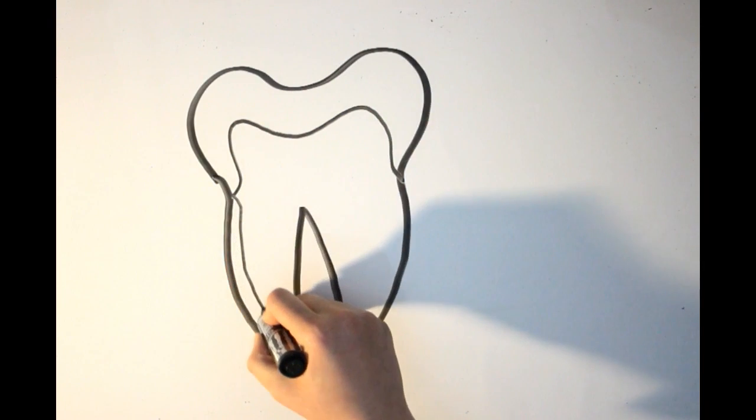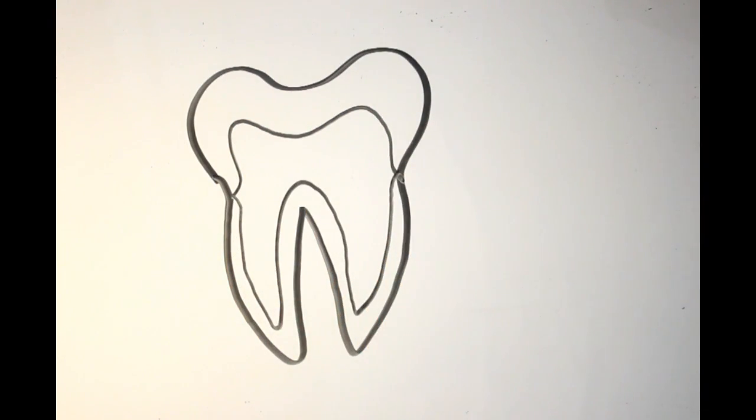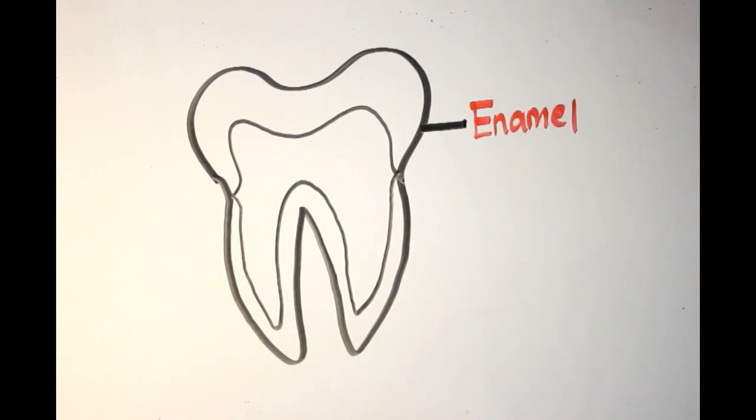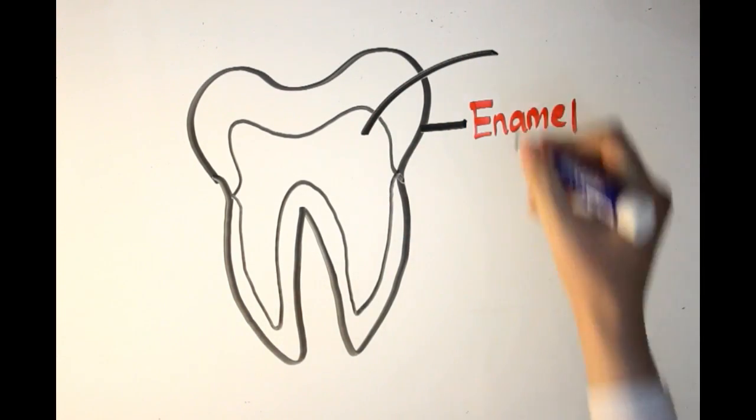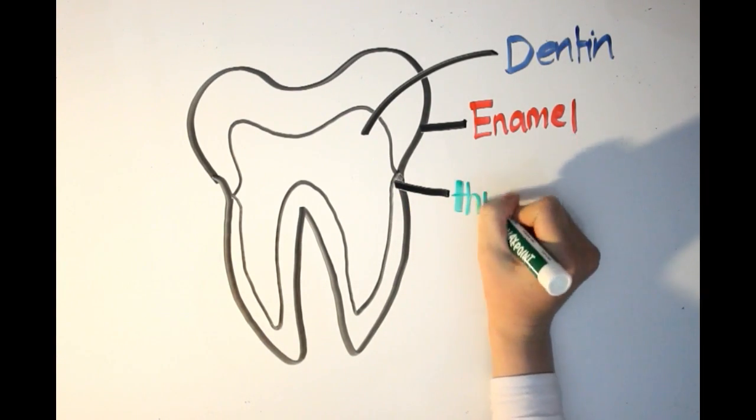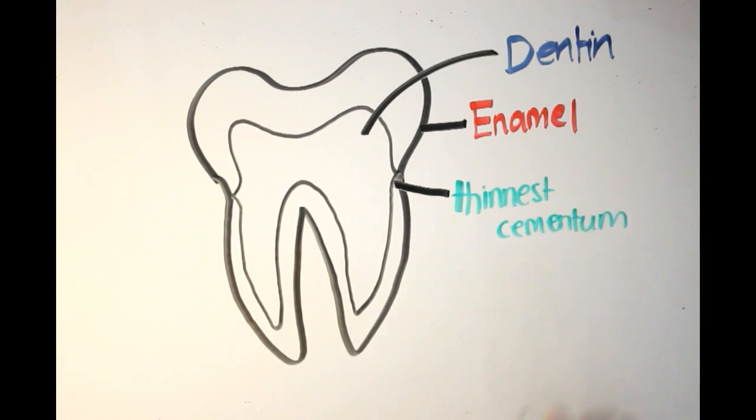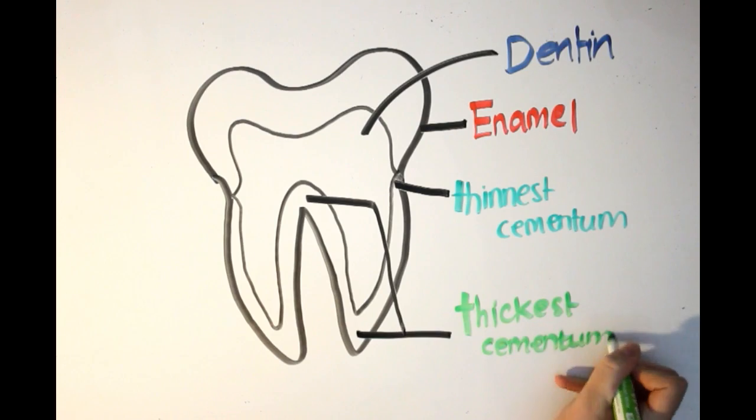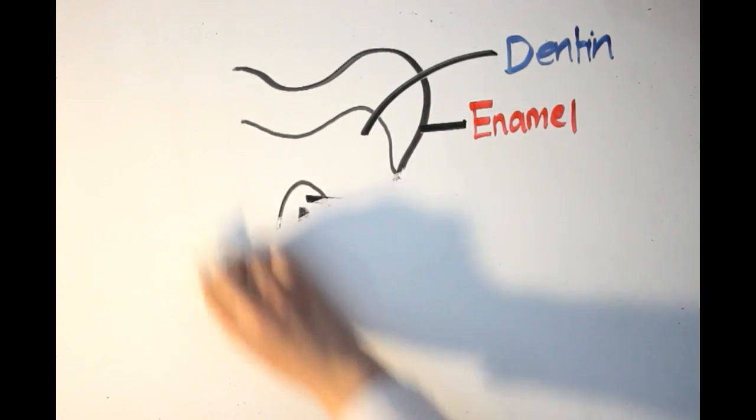Cementum is a thin layer of tissue that covers the radicular dentin. It's avascular, alymphatic, and non-innervated. It varies in thickness at different locations of the root, with the thickest part being at the root apex and the interradicular areas of multi-rooted teeth, and the thinnest part being at the cemento-enamel junction.